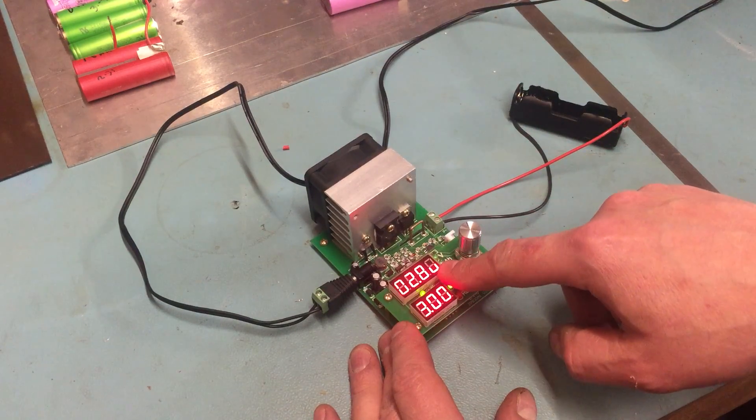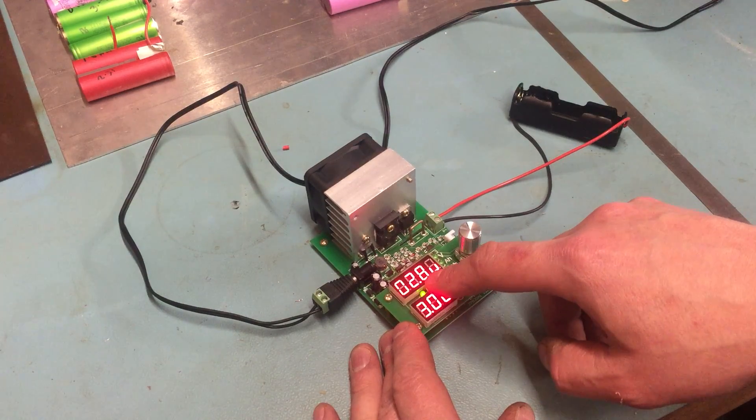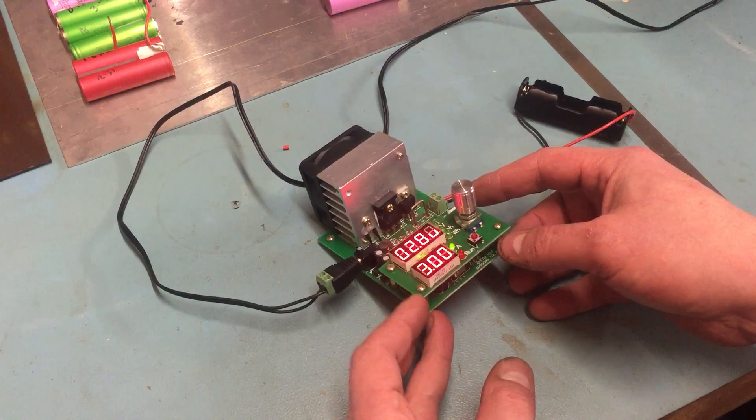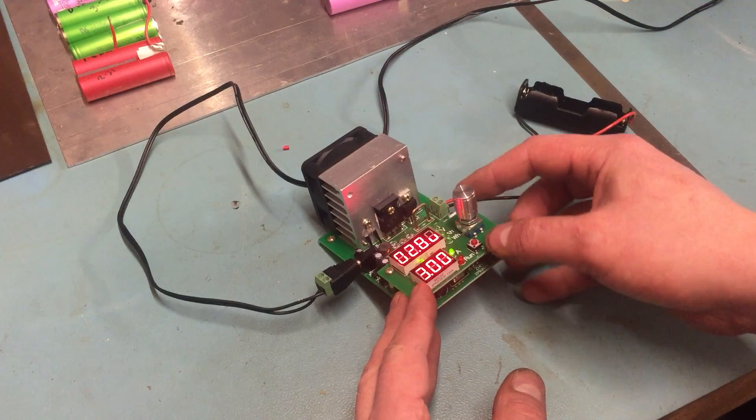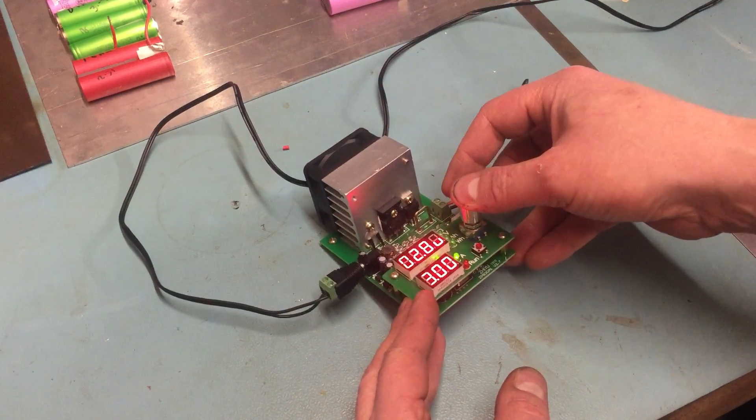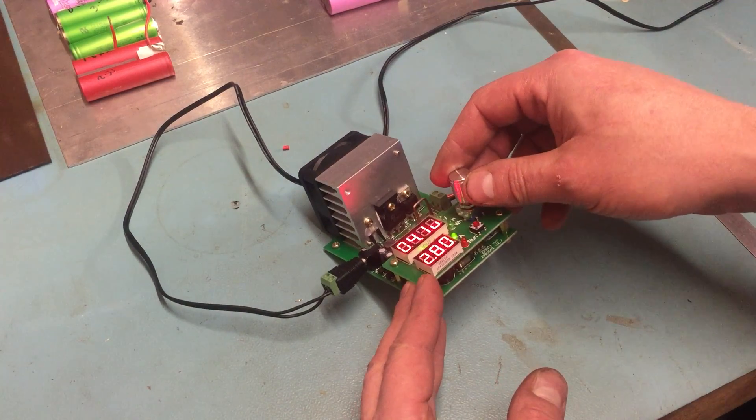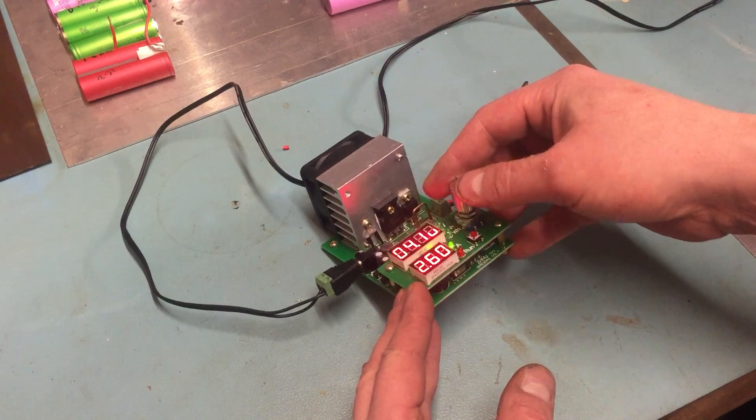This is the voltage that it will stop the load test on. So in the case of an 18650, 2.8 volts is the cutoff voltage. And then the other meter here is the current. You've got a rough current setting and then a fine setting.